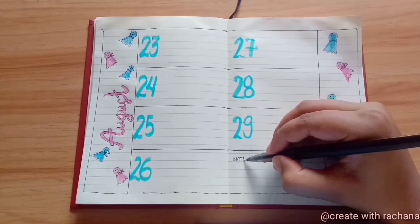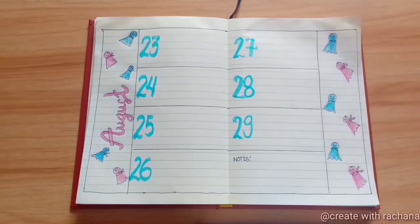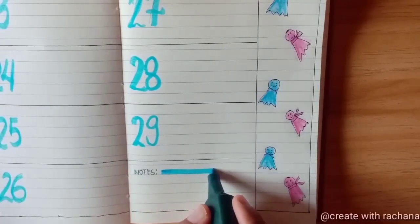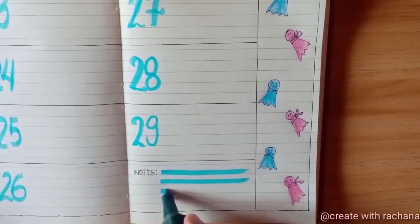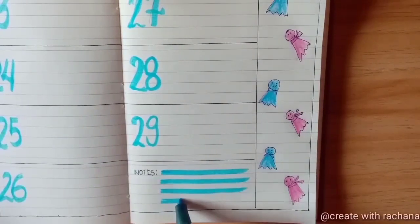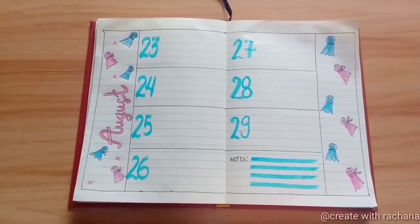At the bottom box you can make a little note section to write some of the important events that might occur in that week. Since I had a little more time, I added some colors but you can leave it as it is. So this was all about the five minute weekly spread.